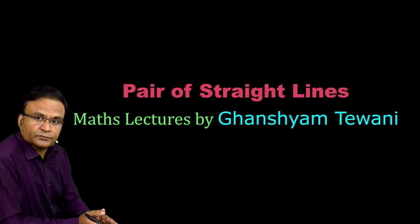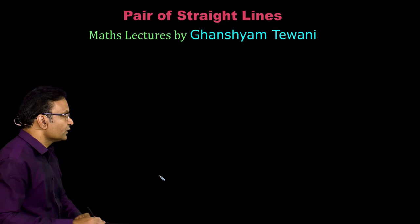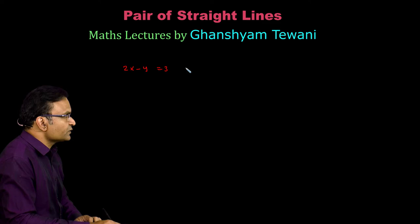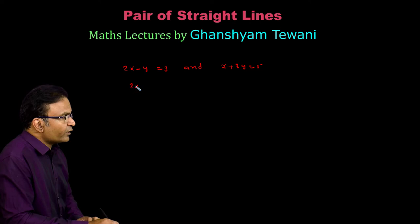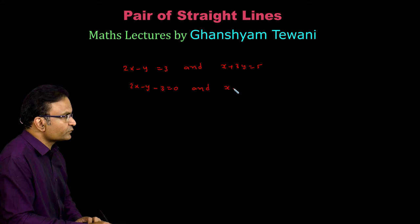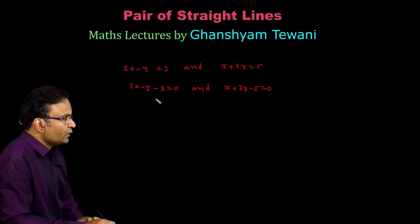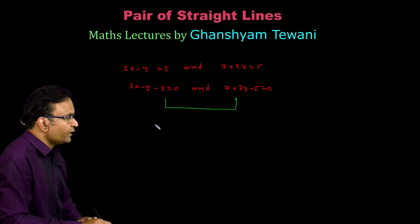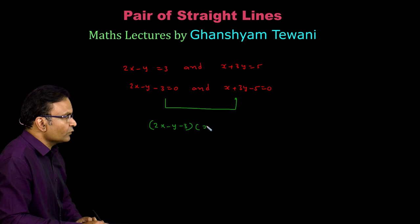To start with, consider these two straight lines having equations 2x minus y is equal to 3 and x plus 3y is equal to 5. Now I modify these equations taking all the terms to LHS. We multiply these two equations, and we have this combined equation of two straight lines.